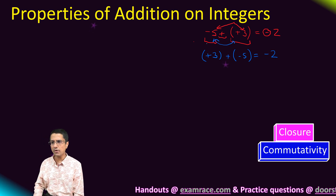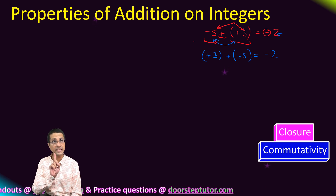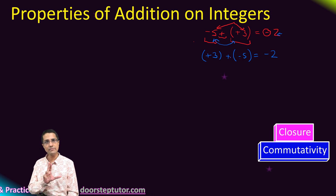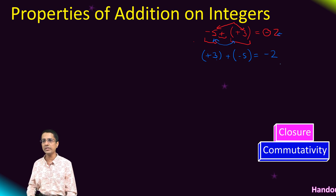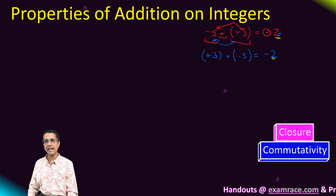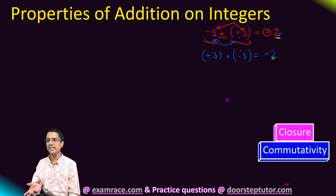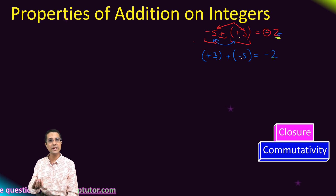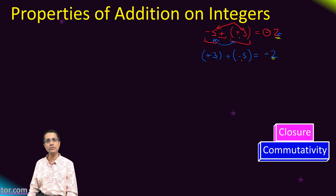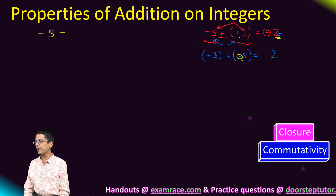Changing the order of operands does not matter; the answer remains the same. All we are doing is looking at the signs of the two operands irrespective of their order. We find them to be different, take the difference — which is simply 2 — and then use the sign from the larger magnitude operand. Changing the order does not change the larger magnitude operand; it remains minus 5 in both cases, so the answer takes on the minus sign.